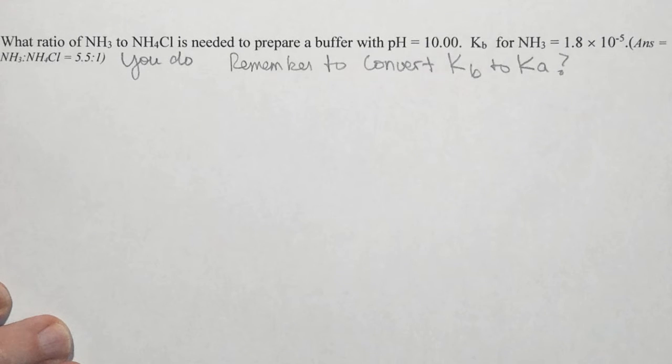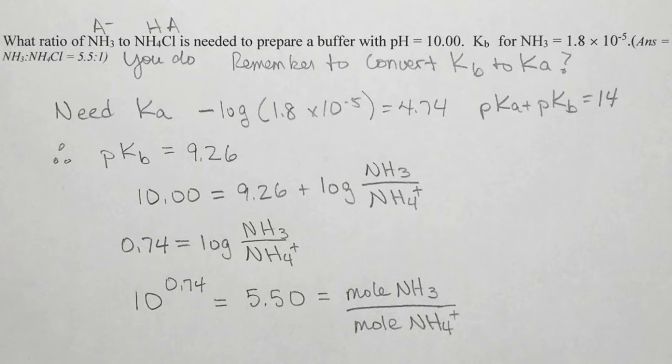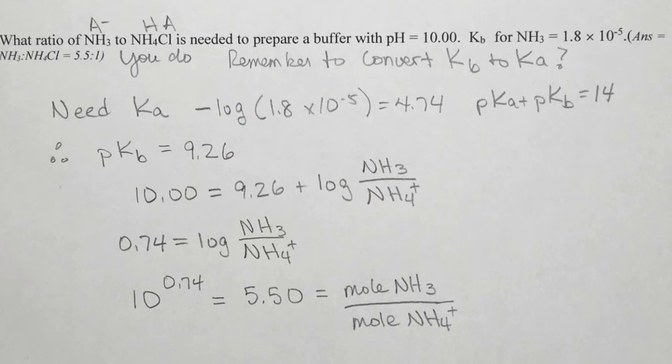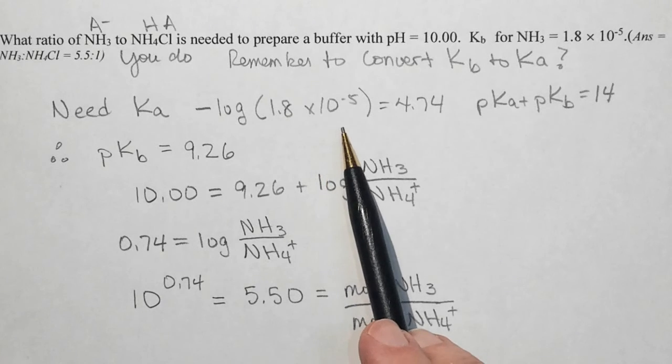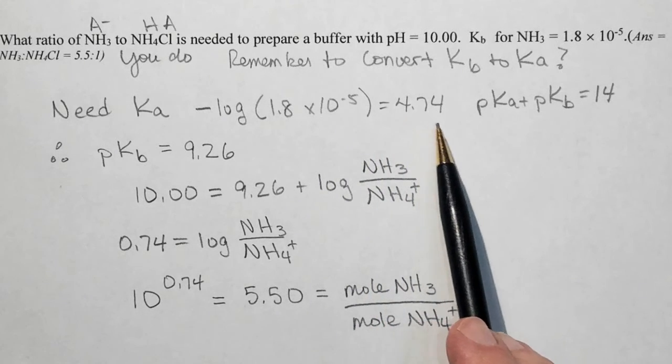Did you remember to convert Kb to Ka? If not, pause and try again. Okay, so let's take a look at working the rest of this problem. You need Ka. So you're going to solve for negative log of 1.8 times 10 to the negative fifth. That's 4.74. pKa plus pKb is equal to 14. Therefore, your pKb is equal to 9.26.